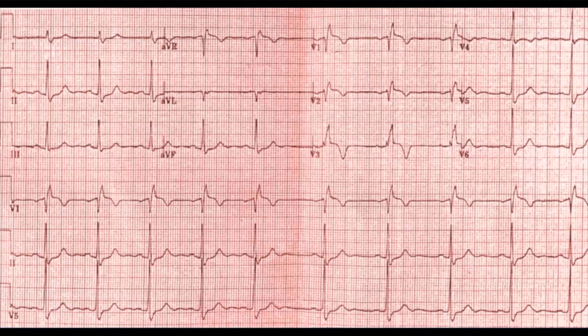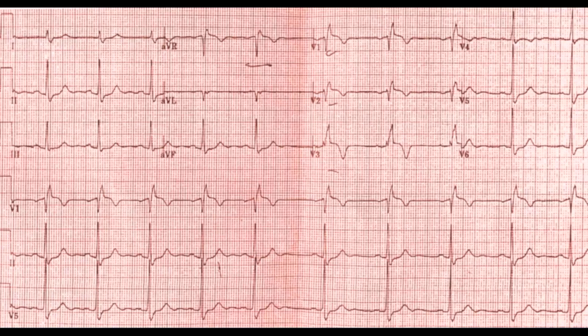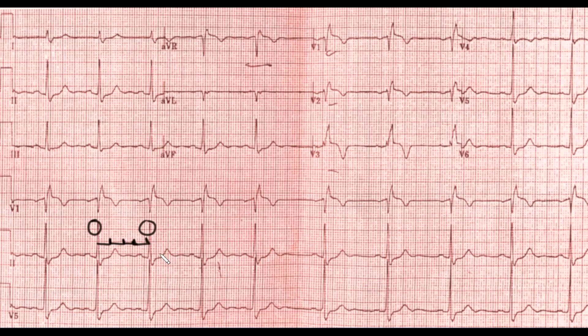Let's go through our evaluation using our five-step process. The first thing we want to look at is rate. We can pick the easiest place to look at, which is the QRS complex. We can see here clearly that we've got one box, two boxes, three boxes, and then four, and maybe a little bit extra.